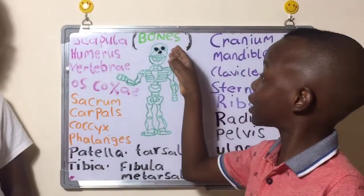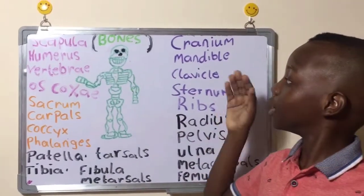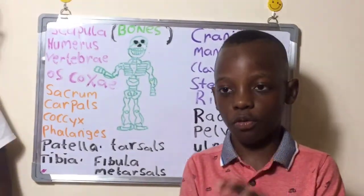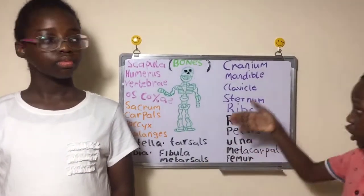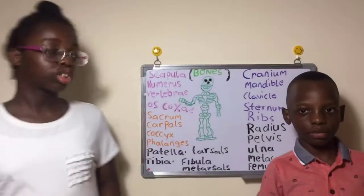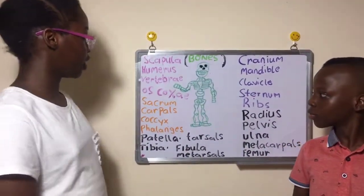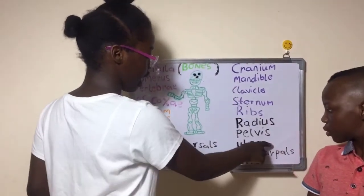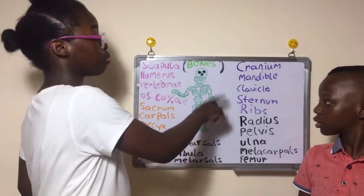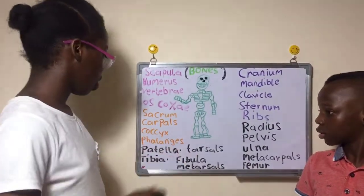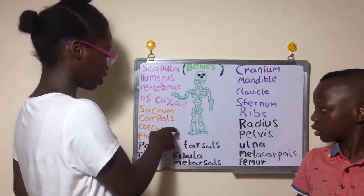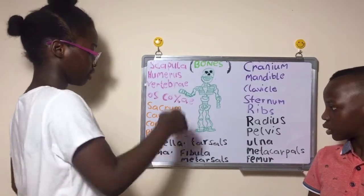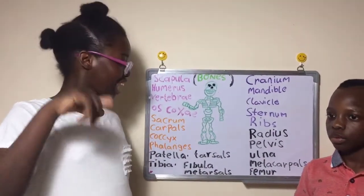Those are the axial bones, and these are the appendicular bones — the ones that make you move. Starting with the appendicular bones is the humerus. Then there is the radius and ulna. Then there are many bones in the hand, starting with the carpals, then the metacarpals, and the phalanges. Phalanges are found in both the hands and the legs.